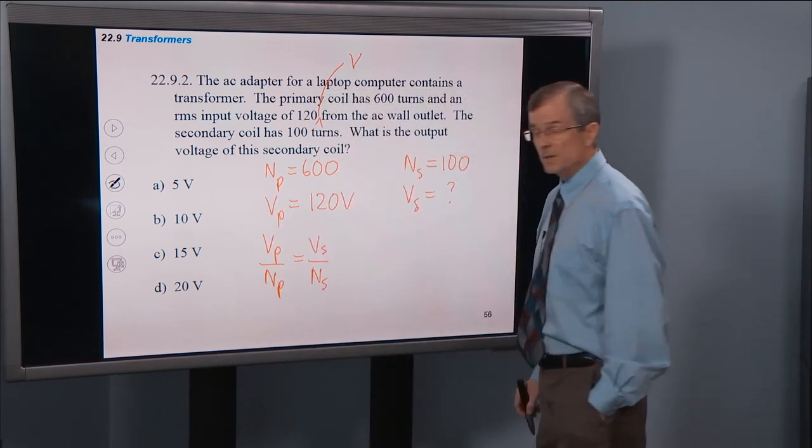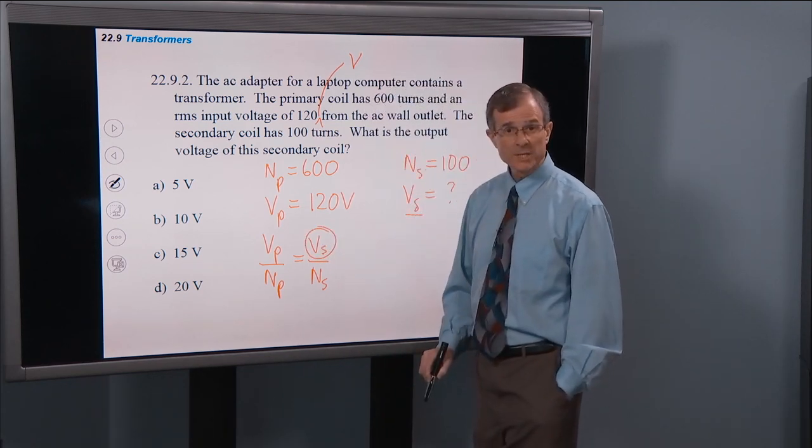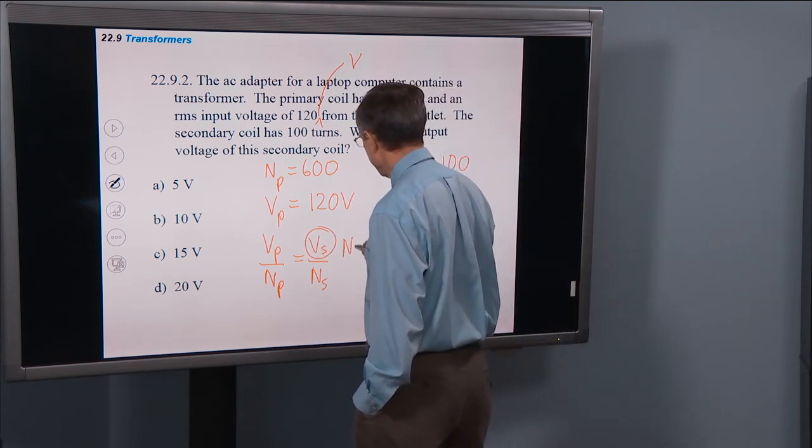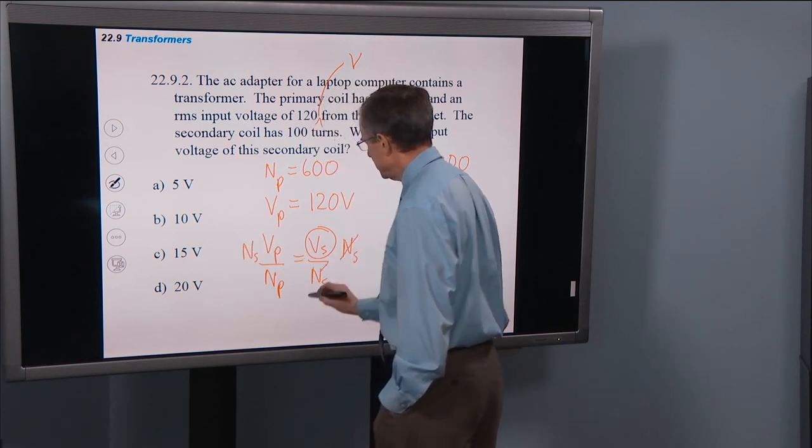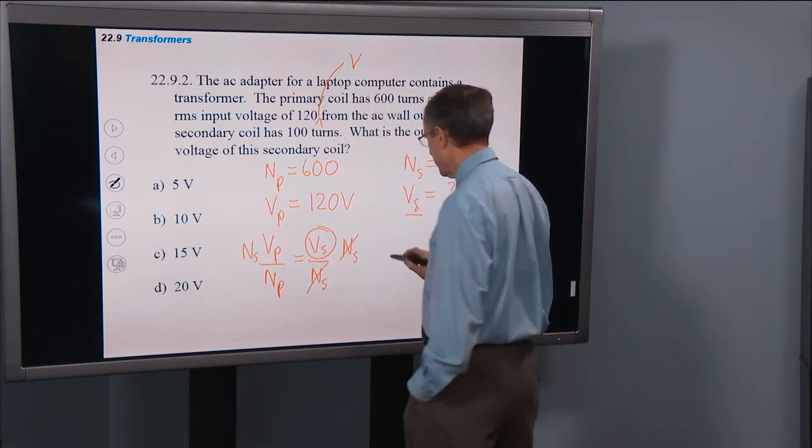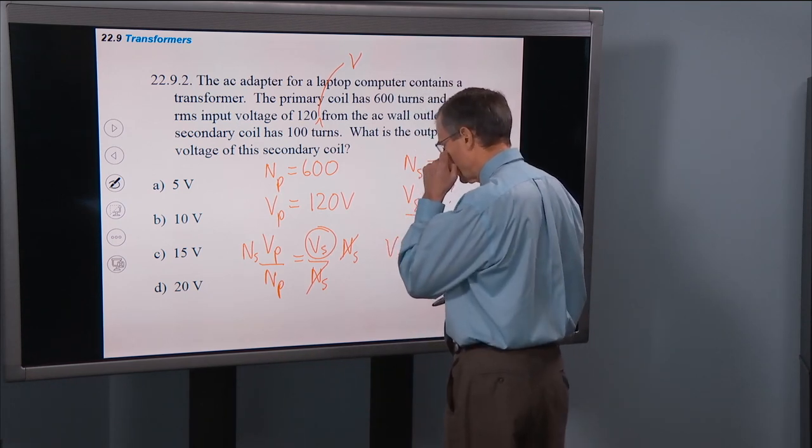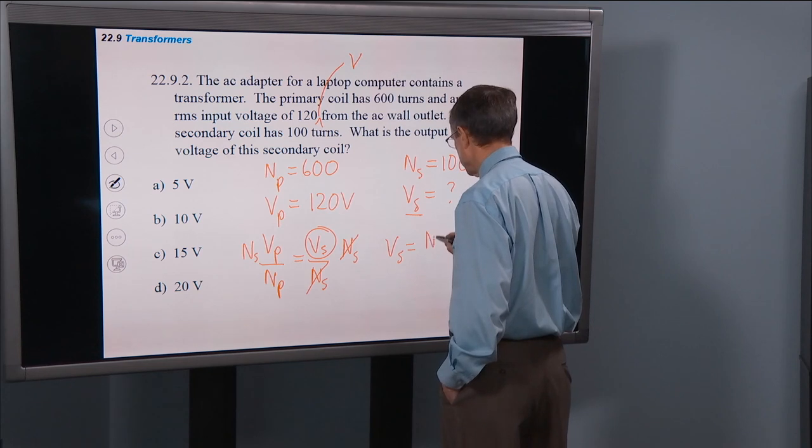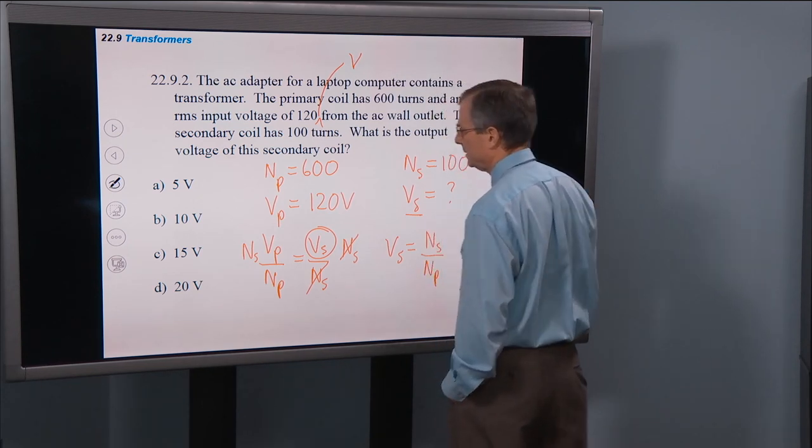And we're trying to solve for Vs. Easily done, we multiply both sides by Ns. The Ns's cancel on the right-hand side. And we get Vs is Ns over Np times Vp.